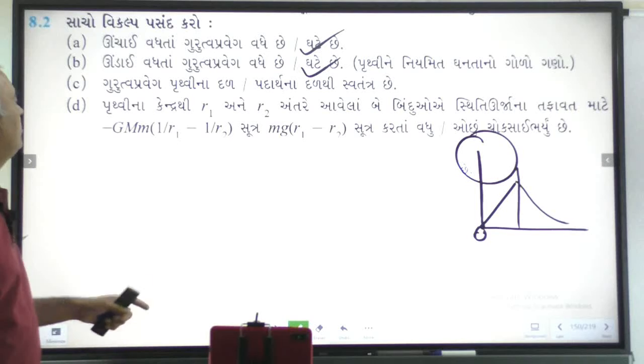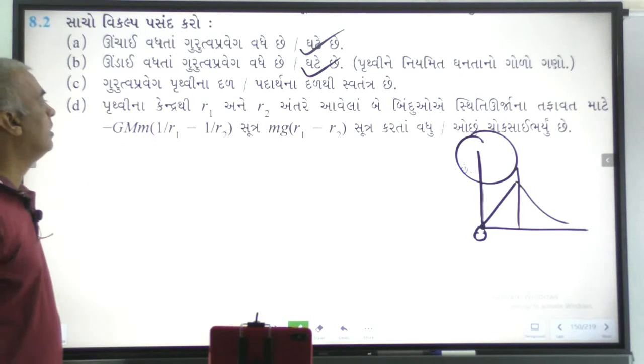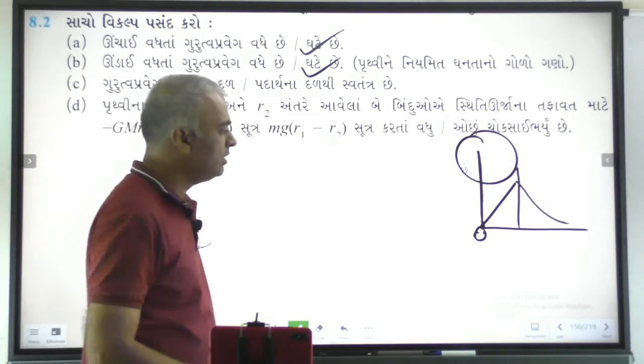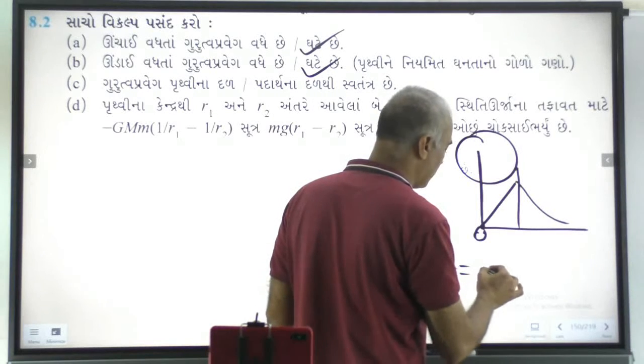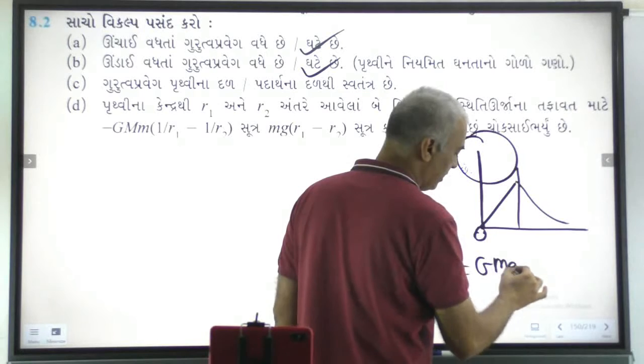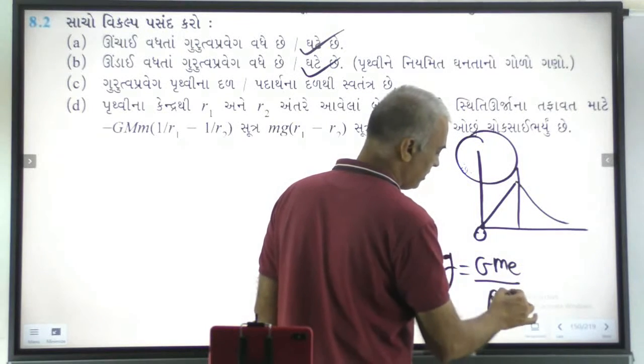Is it BG-vashtu, GURU-TWA PRAVAIG, PRUTVINA DALH, PADARTHINA DALH? There is SVA TANTRA in the G-NU SUTRA. What is the answer? G-NU SUTRA. G*M*m upon R².